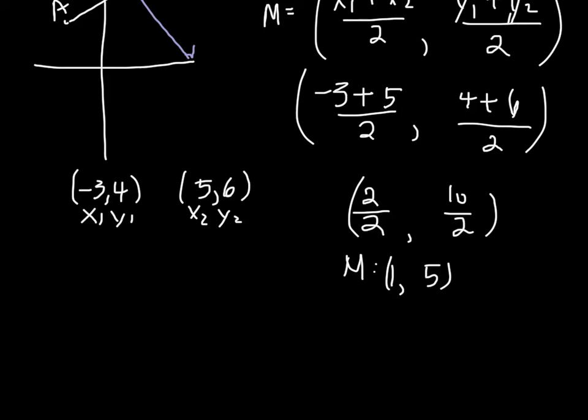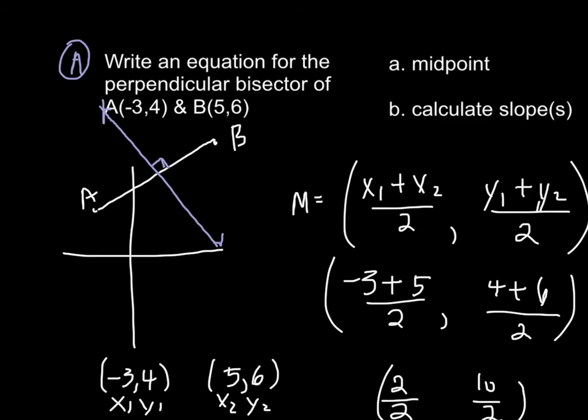This accomplishes the bisector part of our perpendicular bisector, because we know that (1, 5) here is where it bisects and is the midpoint of AB. Now we need to find the slope of A to B.